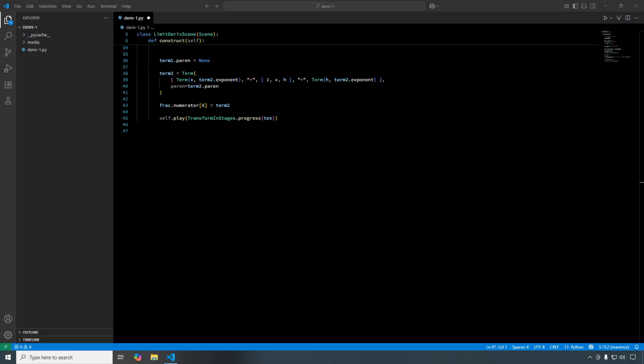If you look at line 38, instead of using expr to store the binomial expansion, I'm reusing the reference for term2. You can see on line 45 that I've added transform in stages dot progress to animate these edits.